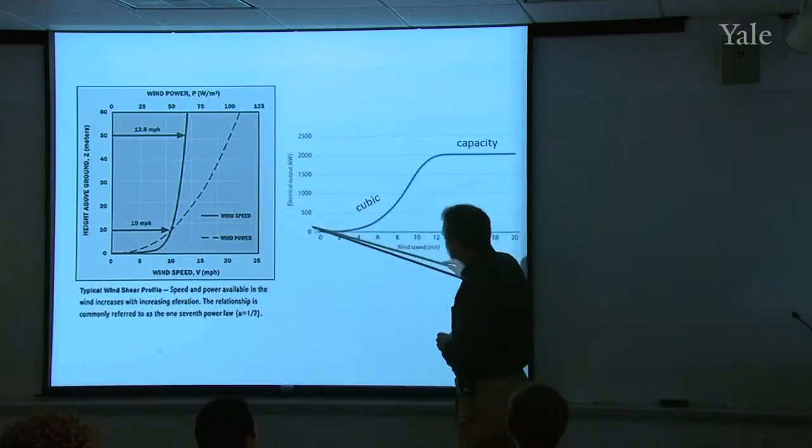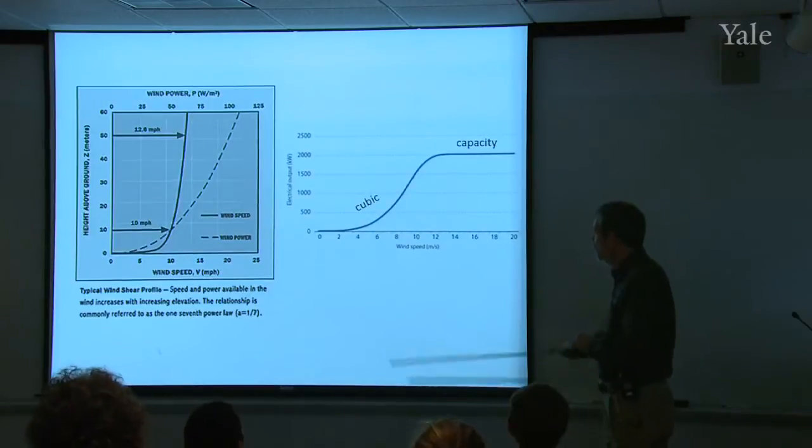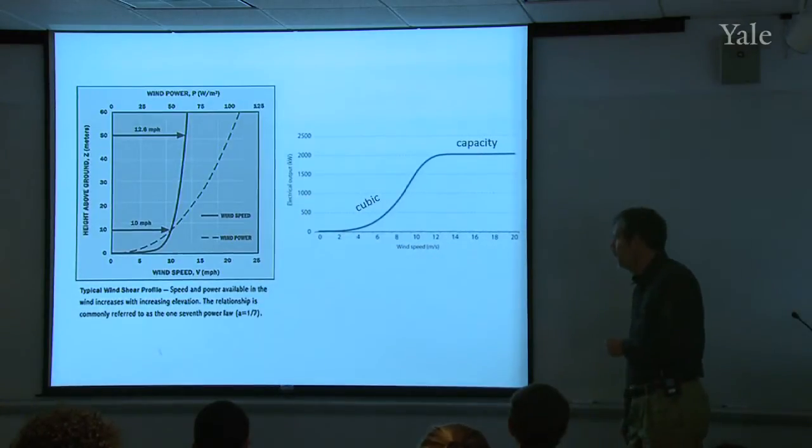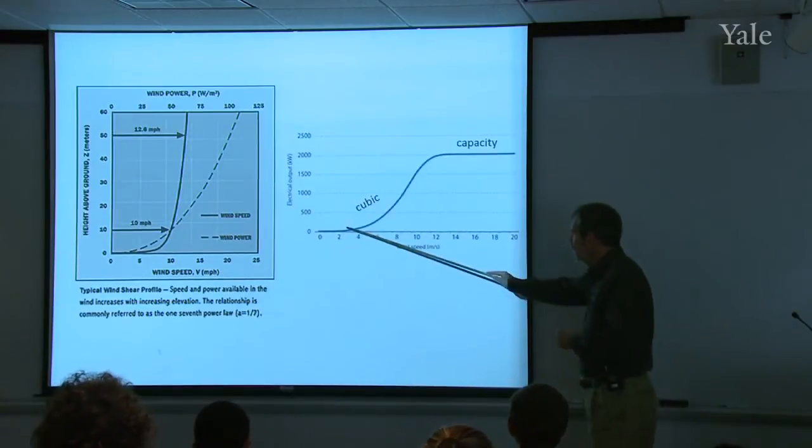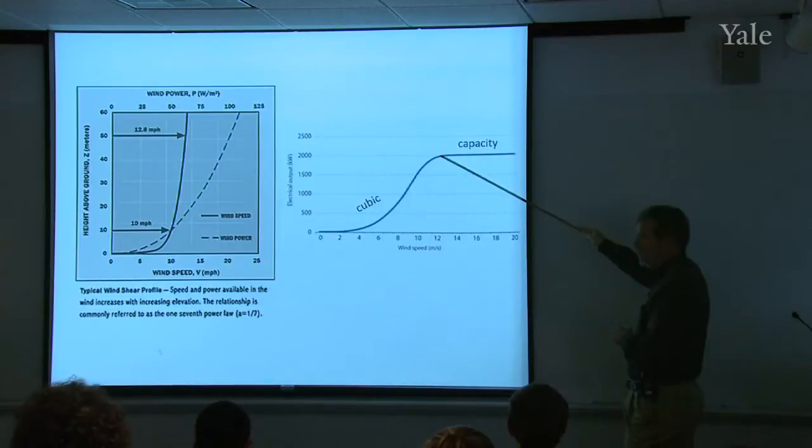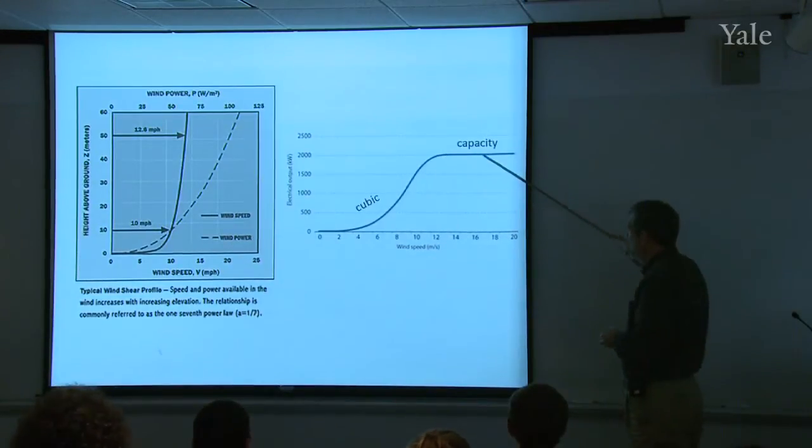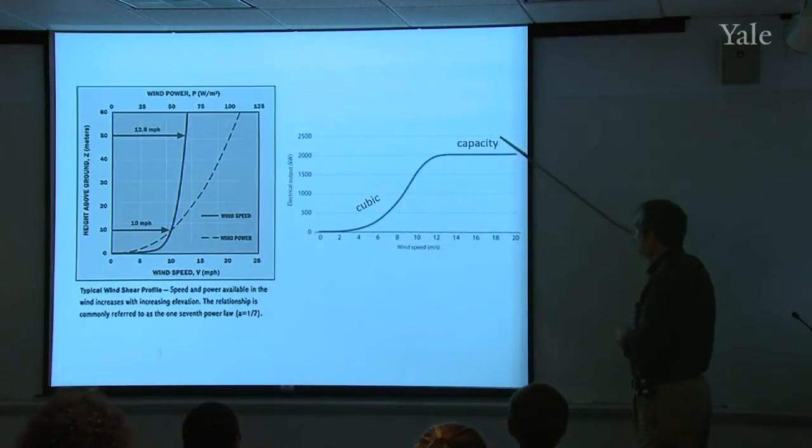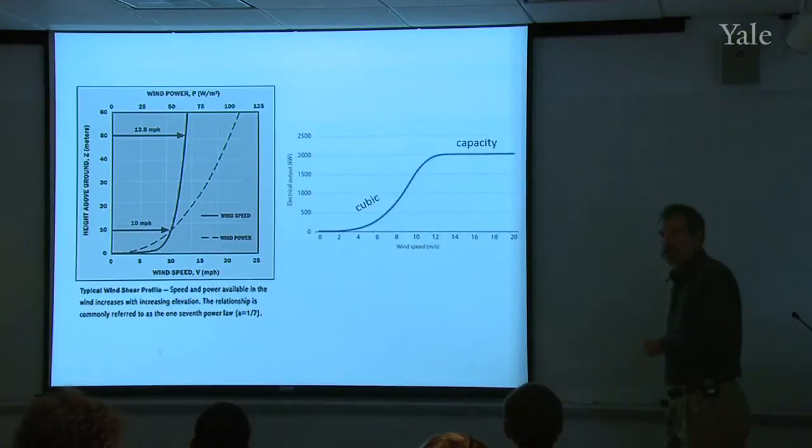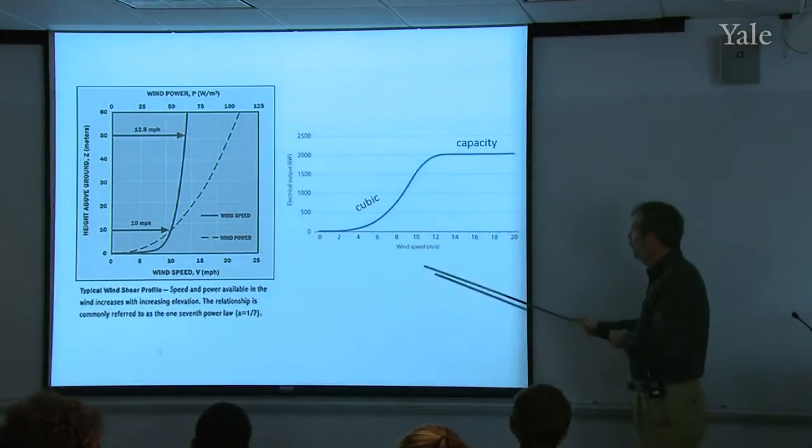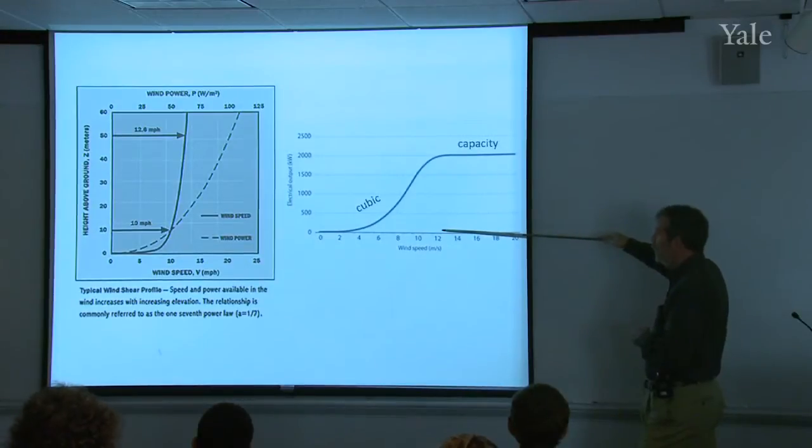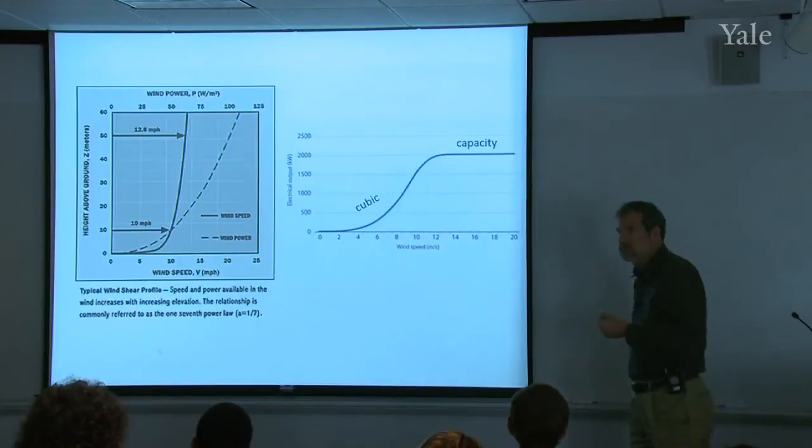If you plot electrical output in kilowatts versus wind speed, it doesn't cut in, start to rotate until you get to about two or three meters per second. And then it increases rapidly like the cube of the wind. But then it reaches a maximum and the system shuts down or just feathers the blades to give you constant output beyond that. So this would be what's called the maximum capacity of that wind turbine. But to achieve that, you've got to have a speed, in this case equal to 12 meters per second, which is a pretty good wind. So every wind turbine has a slightly different curve, but they all look something like this. Some of them actually shut down when you reach that maximum wind to protect against damage to the wind turbine.